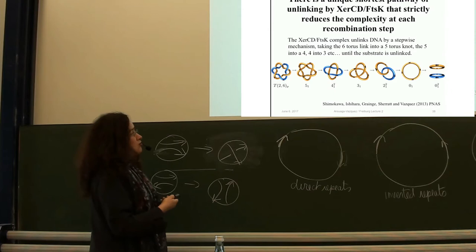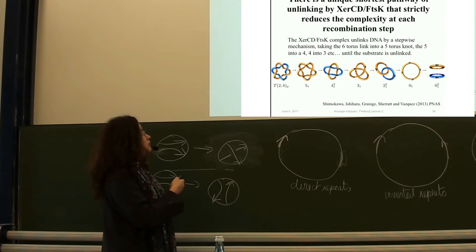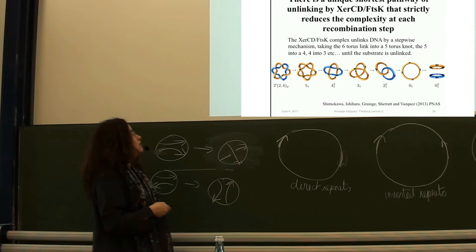This just repeats it for the 6-crossing case to make it more concrete. You see the six steps explicitly: you go from link to knot, to link to knot, to link to knot, et cetera.